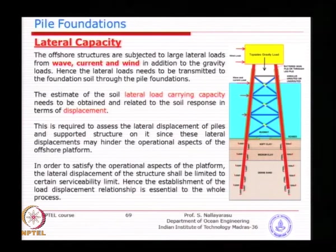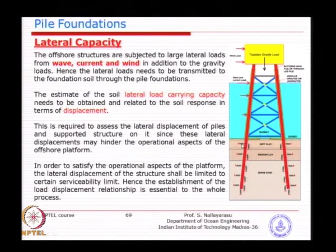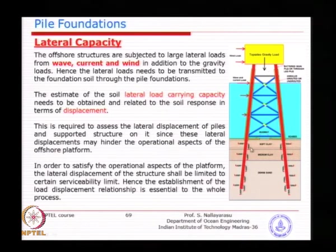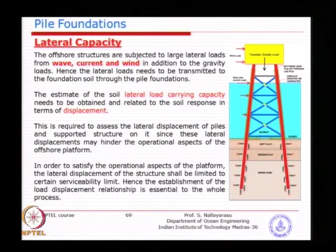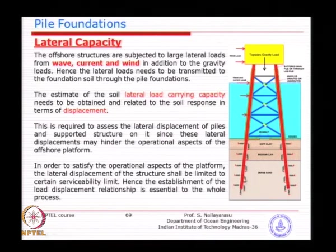Beyond the seabed level, only the pile exists — there is no structure. This pile will transfer the horizontal loads to the neighboring soil around, creating forward pressure depending on whether the load is in the forward or negative direction. If there is a load in this direction, the soil beneath in this area is going to get compressed depending on its characteristics. Imagine if it is just a uniform soil from top to bottom — you will see a specific load or pressure versus displacement relationship.